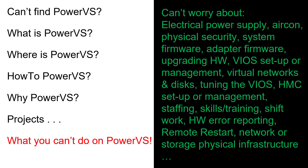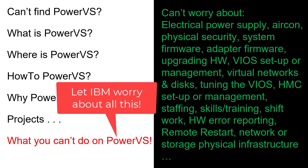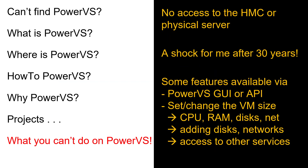I'm having to move my computer room between two IBM buildings - it's a nightmare with all these things to get right to make the move a success. There's also no access to the HMC or the physical server, which is a bit of a shock for me. There are a whole bunch of features available via the PowerVS graphical user interface or the API - things like setting and changing the VM sizes for CPU, RAM, disks and networks, adding new disks, adding new networks, and accessing new services from IBM Cloud.